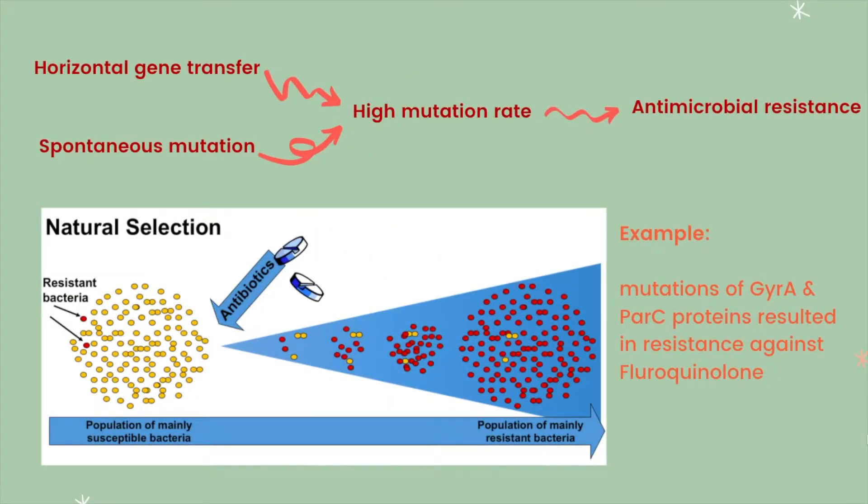The bacteria's high mutation rate through horizontal gene transfer and spontaneous mutation is a massive problem as it has led to cases of antimicrobial resistance. For instance, in Japan, the bacteria's mutations of GYRA and PARC proteins have resulted in the development of resistance against fluoroquinolone, which is the class of antibiotics that prevents topoisomerase enzymes from aiding in DNA replication.